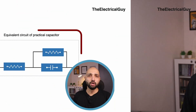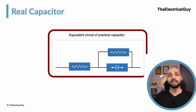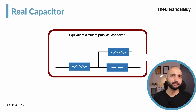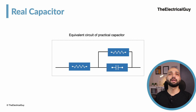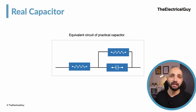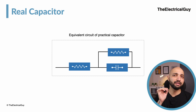So the practical equivalent circuit of a capacitor looks like this. But if we compare the effect of this resistance with the resistance present in a real inductor, we arrive at the result that the capacitor's internal resistance is very small compared to that of an inductor.